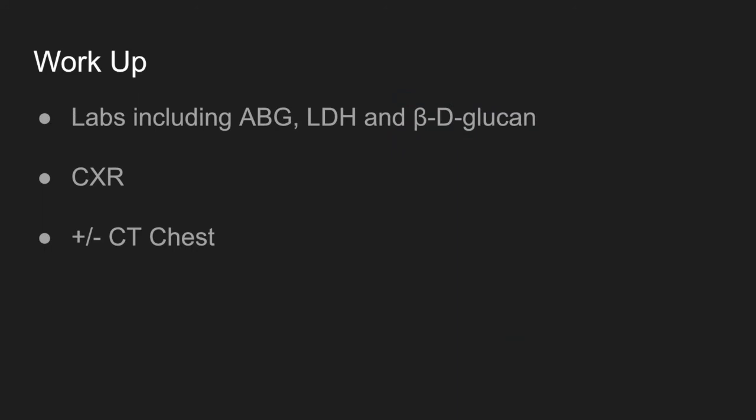For workup, we specifically want an ABG to test the A-a gradient, which would be elevated in PCP due to decreased diffusion through thickened alveoli. A normal A-a gradient is less than 10; in PCP patients it can be as high as 45 or more. We'd also get an LDH — the higher it is, the worse the prognosis in PCP. A beta-D-glucan, a component of the PCP cell wall, can also be checked. For MAC, lab findings may include anemia, neutropenia, and elevated LFTs due to other organ involvement.